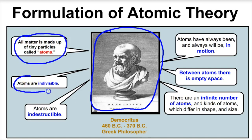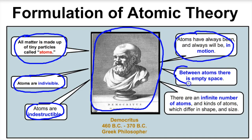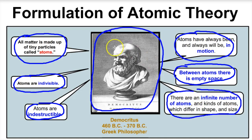Democritus says that all matter is made up of tiny little particles called atoms. He says these atoms are indivisible and indestructible. He also says that these atoms are always in motion, and between these atoms there is empty space. And last but not least, Democritus says that there's an infinite number of atoms and kinds of atoms, which differ in shape and size. Not a bad little theory for 2,000 years ago.